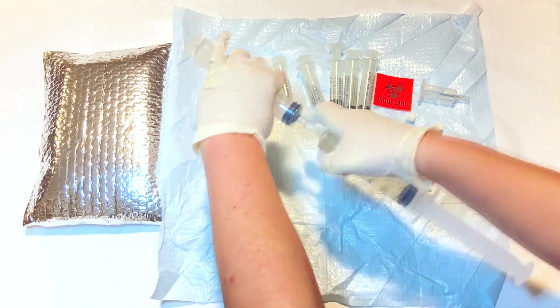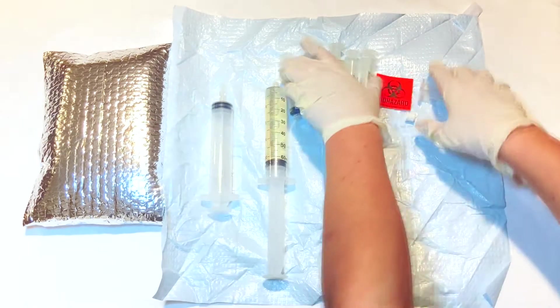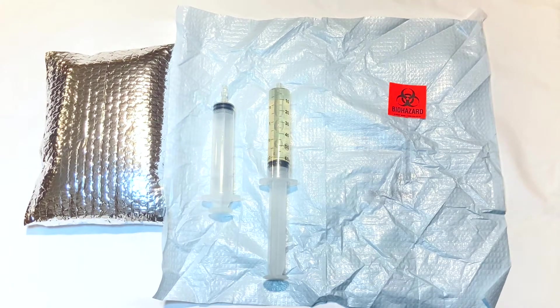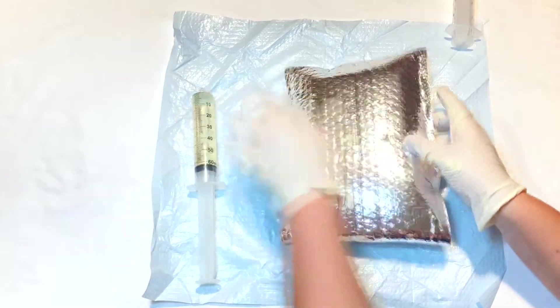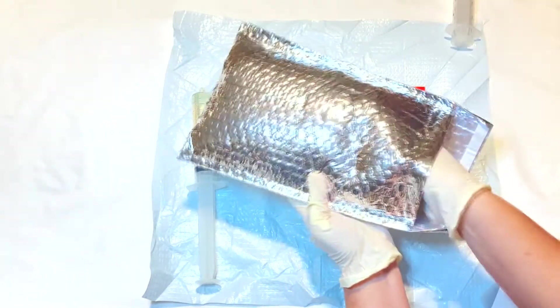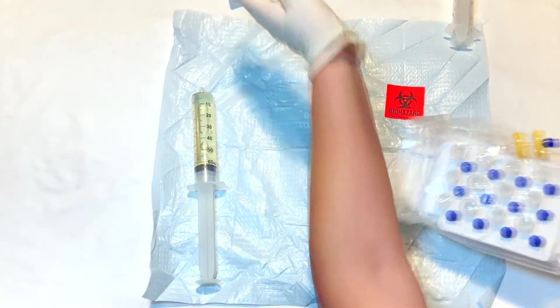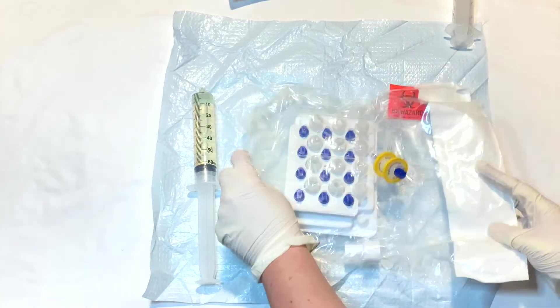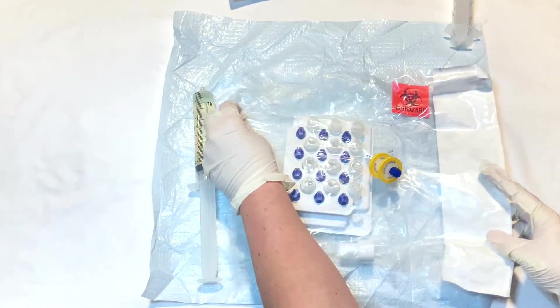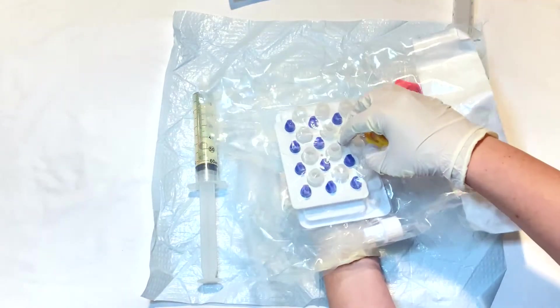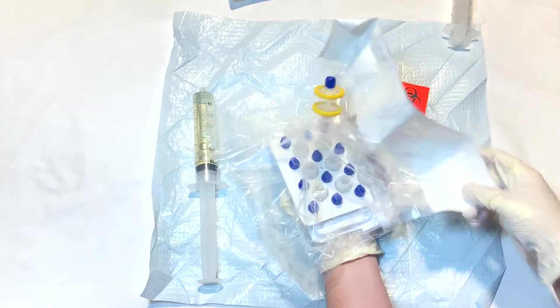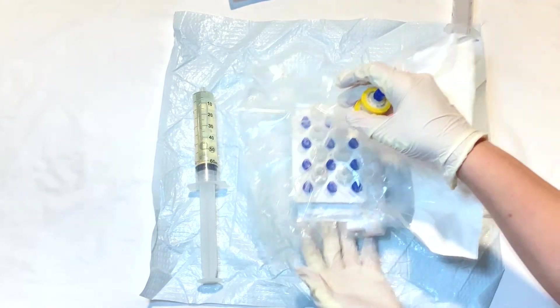Detach the filled syringe from the female-to-female luer adapter and set it aside. Remove the Paula 12 sterile kit from the insulated pouch. The Paula sterile kit is a sterilized closed system comprising a sealed processing bag into which an integral 0.2 micron syringe filter provides the only pathway for fluid entry. Inspect the bag to ensure there are no holes or tears.